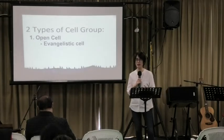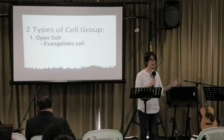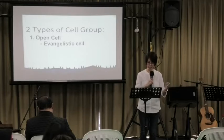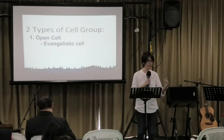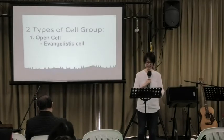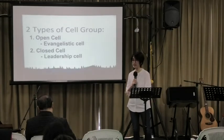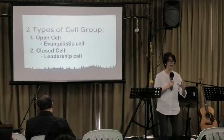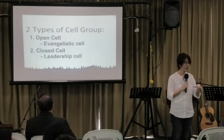What we do is encourage the members of the cell to really invite, especially those who are unchurched, those who are unbelievers, those who need the Lord. That's one purpose of the open cell — everybody's welcome to come in, everybody's welcome to be part of the cell group. That's why we call it open. And then the other type of the cell group is the closed cell or the leadership cell.